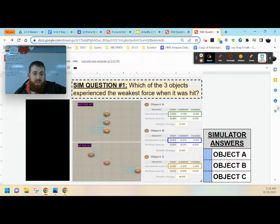Looking at object A here, it started with a velocity of one going to the right, and then after it was hit, it had a velocity of negative two, changed by negative three. B has a velocity of three going to the right, and then after it was hit, it had a velocity of zero, so it changed by three. And then object C here had a velocity of five, and then after it was hit, it had a velocity of four, changed by one.